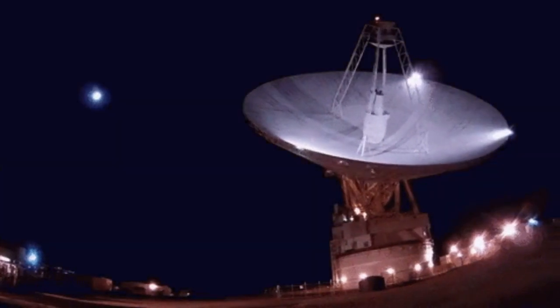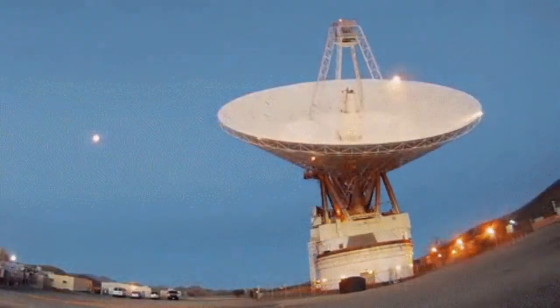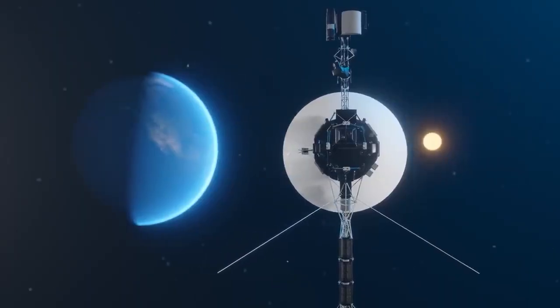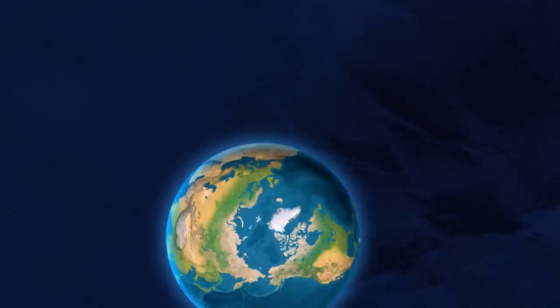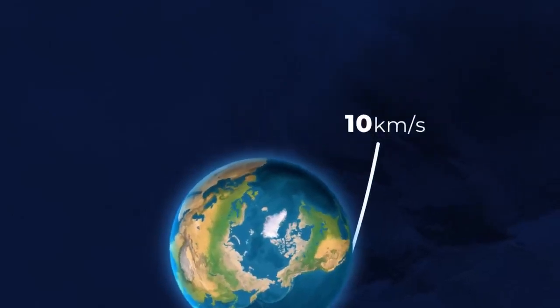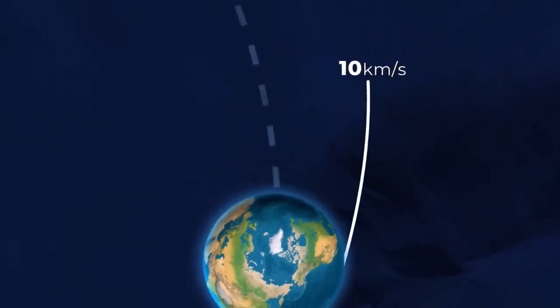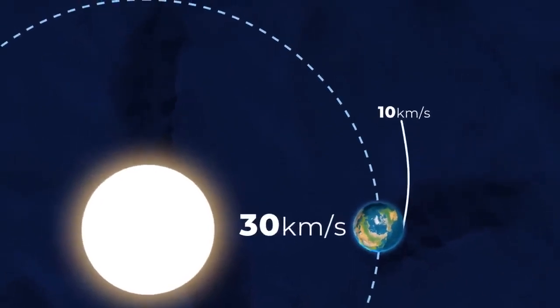However, on a hopeful note, the American space agency's deep space network, comprising large radio antennas globally, successfully detected a heartbeat signal from Voyager 2, indicating that the 46-year-old spacecraft has reignited its operations.